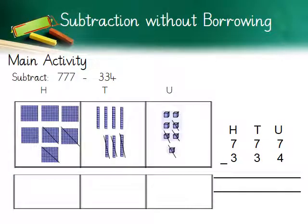The answer is 375. Now the given sum is 777 minus 334. Children, try to do it yourself following the same steps — first subtract the units, then the tens, then the hundreds. Look at the first place value table; the values which have been cut down have been taken away. Draw the values for the answer in the table below. Take your time, try to solve and draw it, then check your answer.